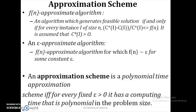An approximation scheme: an algorithm is known as an f(n)-approximate algorithm if it generates a feasible solution such that for every instance i of size n, (c*(i) − A(i)) / c*(i) ≤ f(n), where the optimal solution c*(i) is always greater than zero. This is also known as an epsilon-approximate algorithm if f(n) ≈ ε for some constant ε. This approximation scheme is a polynomial time approximation scheme (PTAS) if and only if for every ε > 0 its running time is polynomial in the problem size.